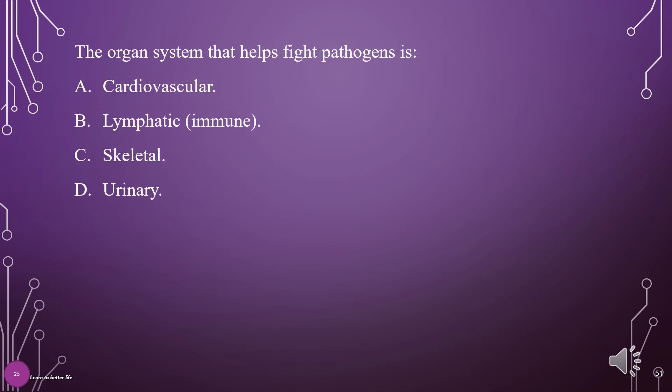The organ system that helps fight pathogens is: Cardiovascular, Lymphatic, Immune, Skeletal, or Urinary. The answer is B: Lymphatic or immune system.